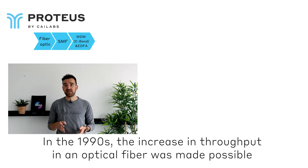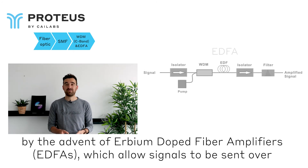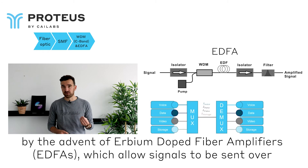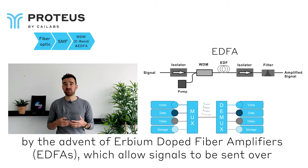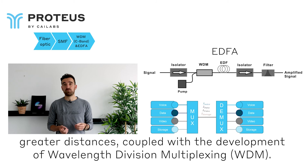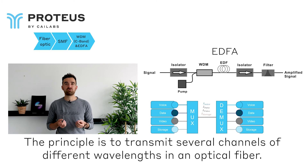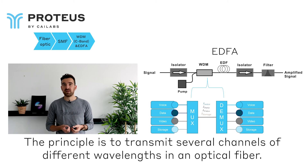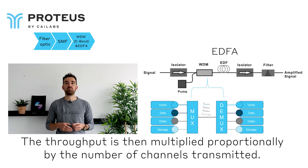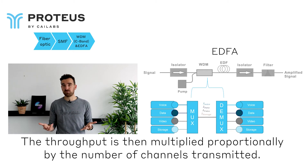In the 1990s, the increase in throughput in an optical fiber was made possible by the advent of erbium-doped fiber amplifiers, which allow signals to be sent over greater distances, coupled with the development of wavelength division multiplexing. The principle is to transmit several channels of different wavelengths in an optical fiber, and the throughput is then multiplied proportionally by the number of channels transmitted.